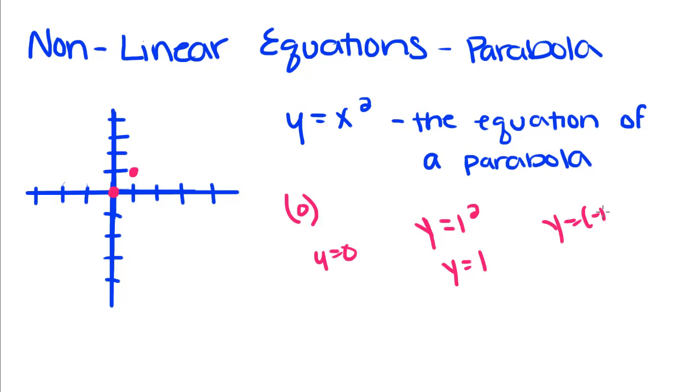If I plug in negative 1, if you remember, any number squared is going to be positive. So I'll get negative 1, 1. If I plug in 2, I'm going to get y equals 4. So 2, 4. Same thing if I plug in negative 1. And this is what a parabola looks like. It's like a u.